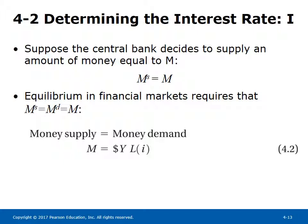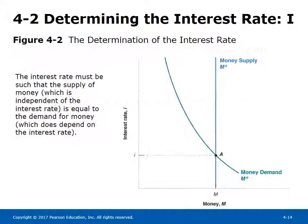Determining the Interest Rate 1: suppose the central bank decides to supply an amount of money equal to M, so MS equals M. Equilibrium in the financial markets requires that MS equals MD equals M. Equation 4.2 states the equilibrium condition: money supply M equals money demand, given by nominal income $y times a decreasing function of the interest rate. The equilibrium interest rate is given graphically by the intersection of the vertical money supply curve and the downward-sloping money demand curve.